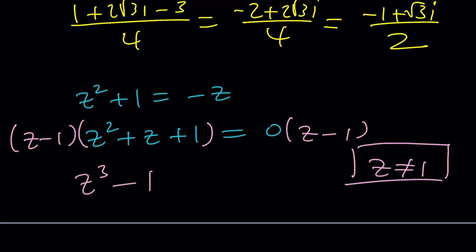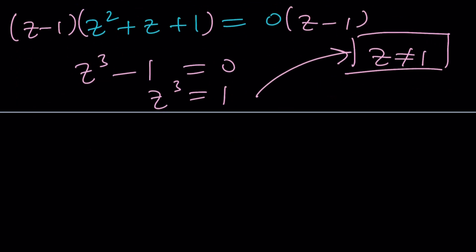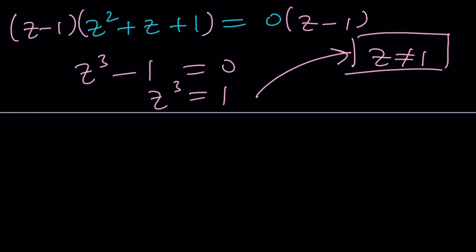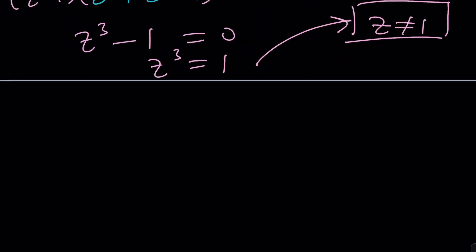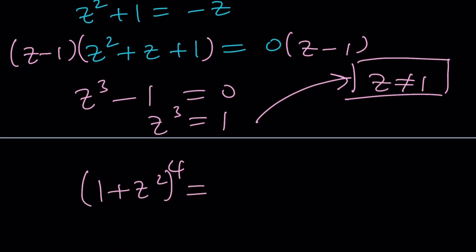So this gives us z cubed minus 1 equals 0, which means z cubed equals 1. In other words z is cube roots of 1 but it can't be 1. So the other cube roots, because remember in the complex world one has three cube roots. One of them is the principal value, the other ones are whatever, but we don't care because what we care about is 1 plus z squared to the fourth power. So we do care about this. How do you find it? Well we just found out that z squared plus 1 is negative z. So let's just replace this with negative z and then raise it to the fourth and that becomes z to the fourth.